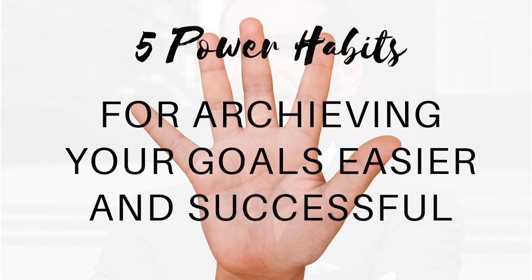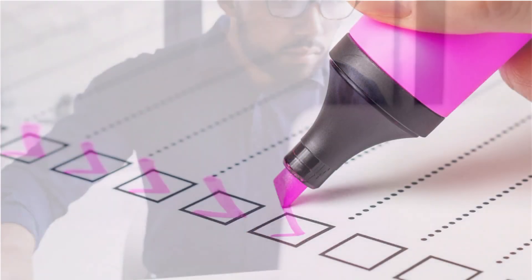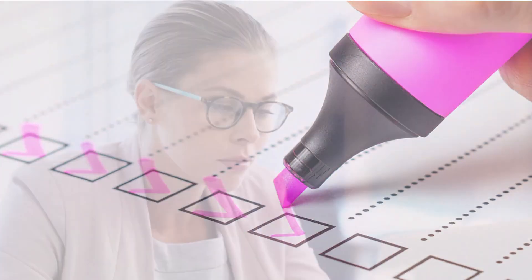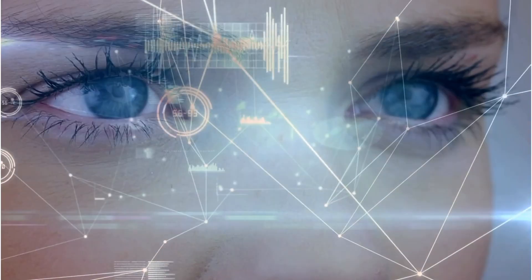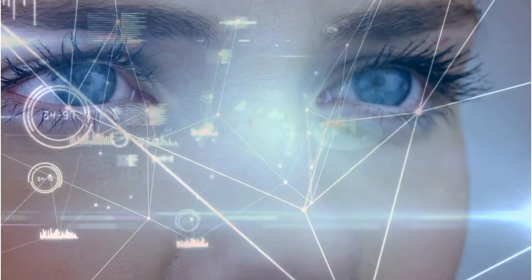5 Power Habits That Can Help You Achieve Your Goals Easier and Be Successful. 1. Focus on your vision, start writing down your goals, put them on a list, and create a habit to check it every day. This way you will keep your focus on what's important to you.